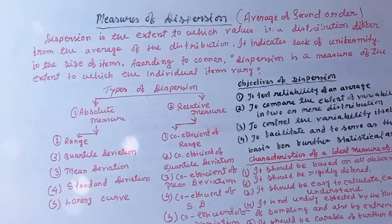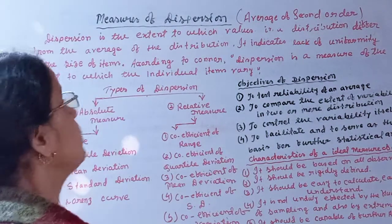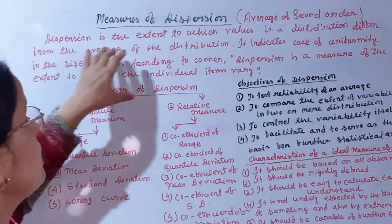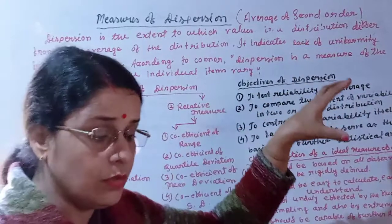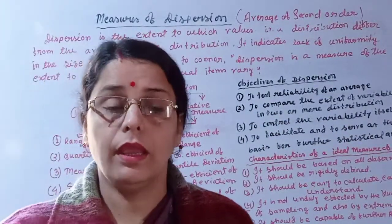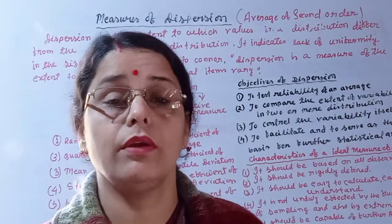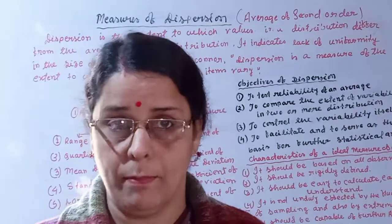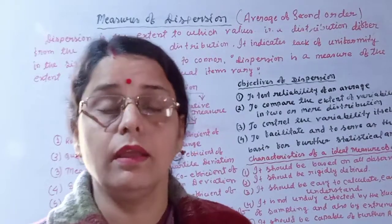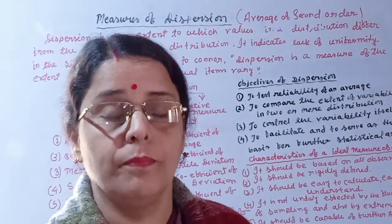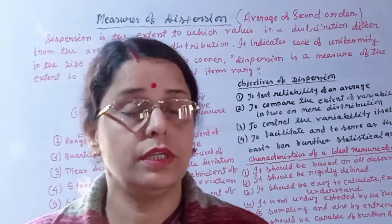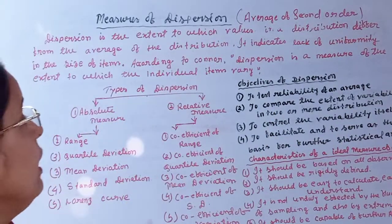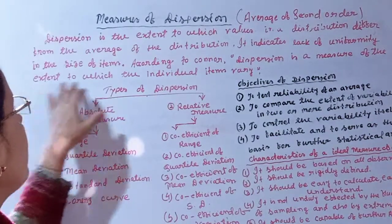Dispersion is the extent to which values in a distribution differ from the average of the distribution. It indicates the extent to which individual values vary, showing lack of uniformity in the size of items.